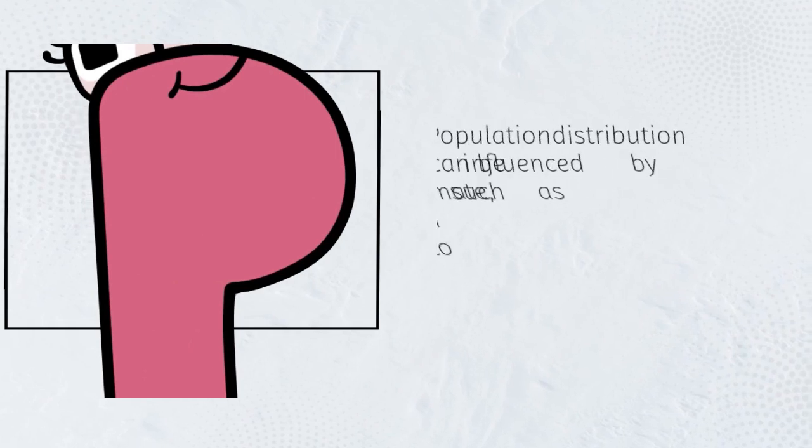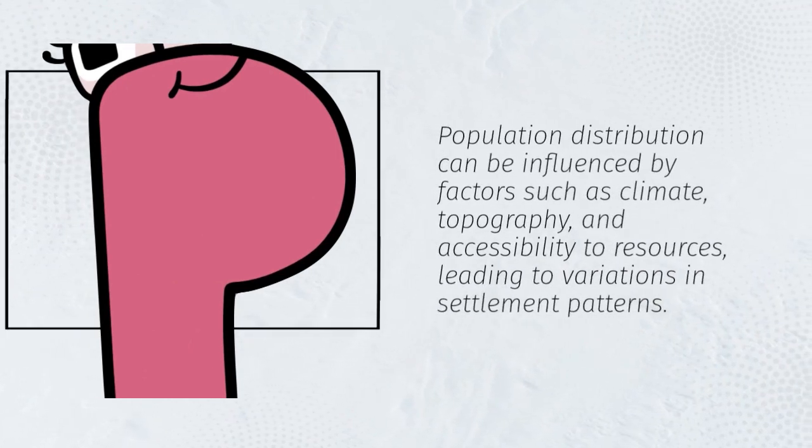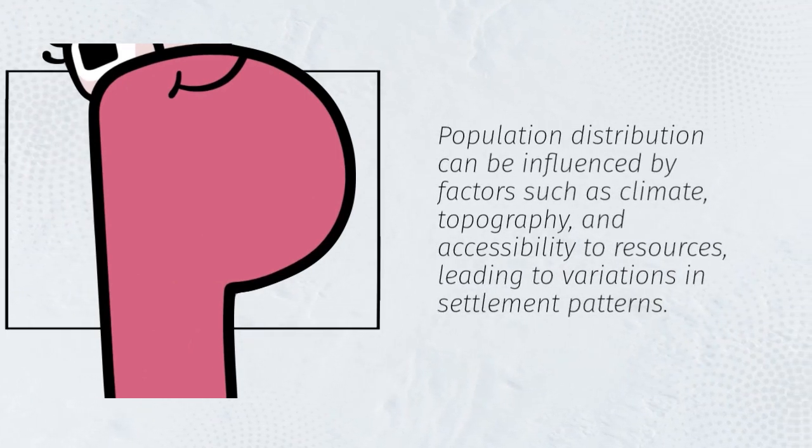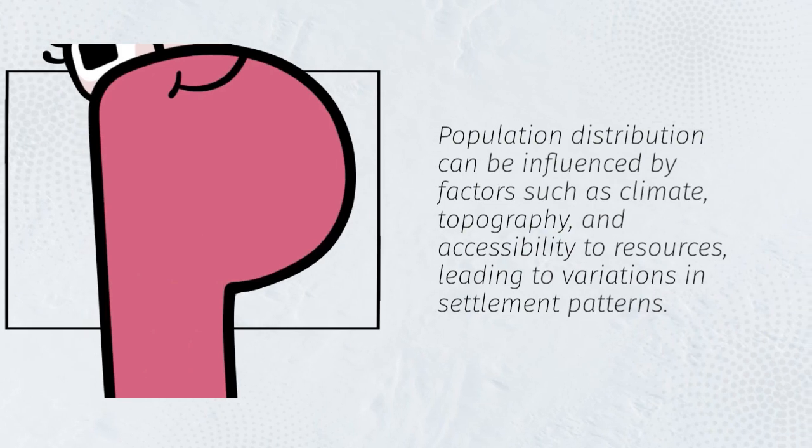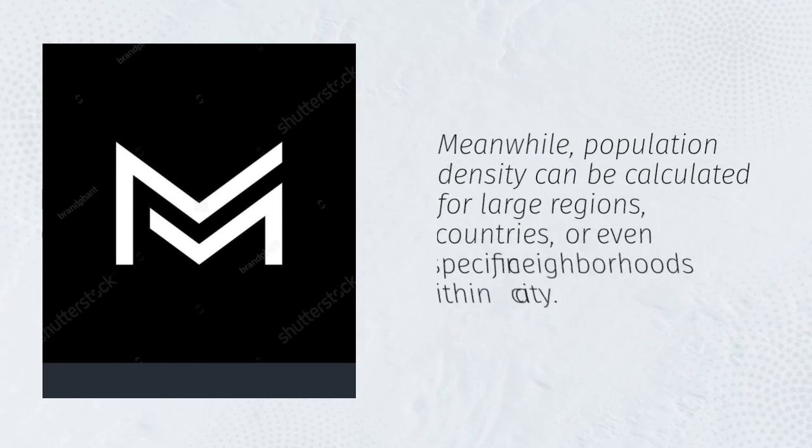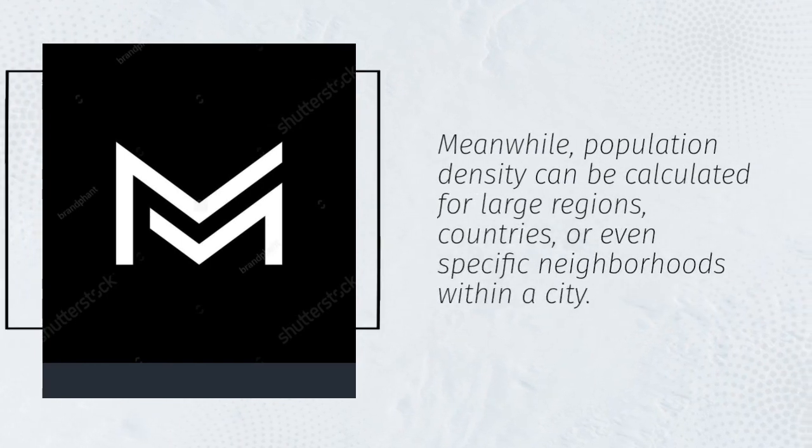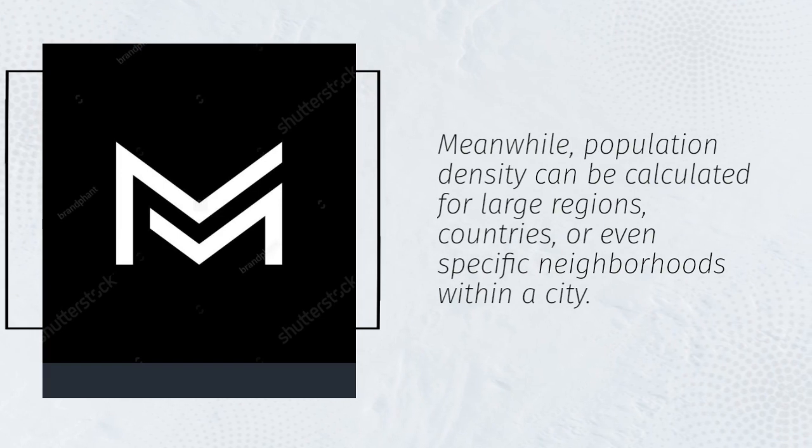Population distribution can be influenced by factors such as climate, topography, and accessibility to resources, leading to variations in settlement patterns. Meanwhile, population density can be calculated for large regions, countries, or even specific neighborhoods within a city.